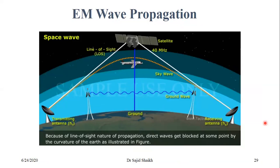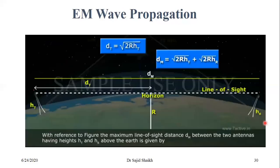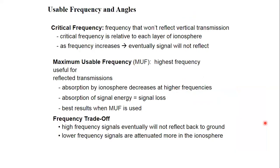Wrapping up the review: the three propagation modes are ground, sky, and space wave. The key electromagnetic wave parameters are frequency, wavelength, and speed of light. The wave carries two types of energy — magnetic and electrical — which are perpendicular to each other. These prerequisites covered, the instructor now moves on to the core topic.